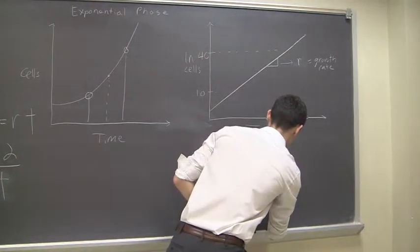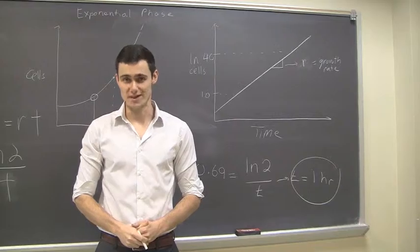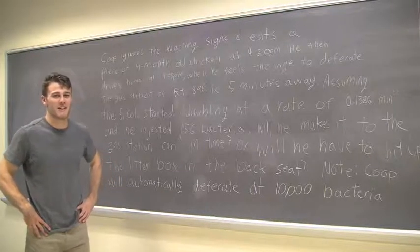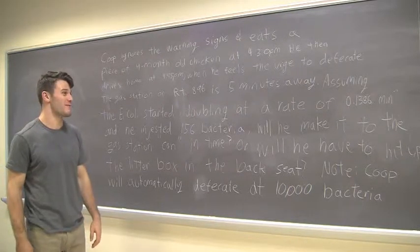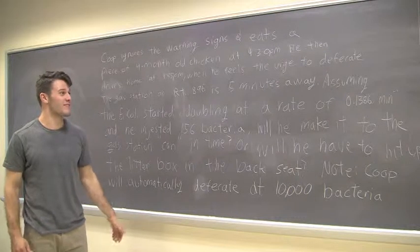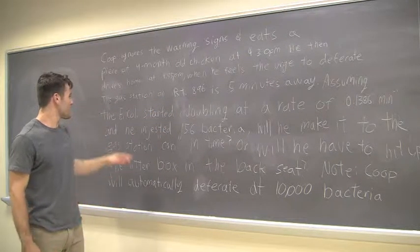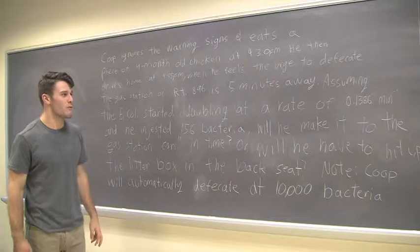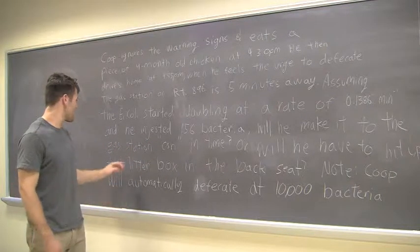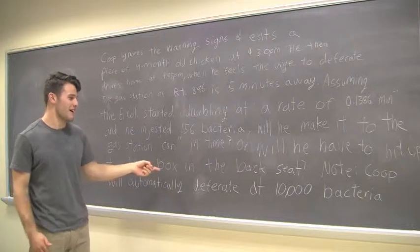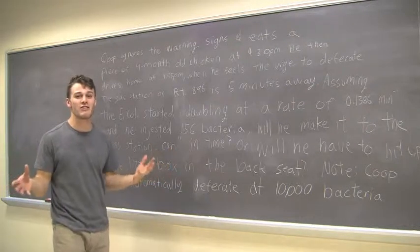Now, solving this equation for t by multiplying on both sides, we have t equals 1 hour, just like how James derived over there. All right, so we have a nice practice problem for you guys here. So, Coop ignores the warning signs, and eats a piece of 4-month-old chicken at 4:30 p.m. He then drives home at 4:55 p.m. when he feels the urge to defecate. The gas station on route 896 is 5 minutes away. Assuming the E. coli started doubling at a rate of 0.1386 per minute, and Coop ingested 156 bacteria, will he make it to the gas station in time? Or will he have to hit up the litter box in the back seat? Note, Coop will automatically defecate at 10,000 bacteria.